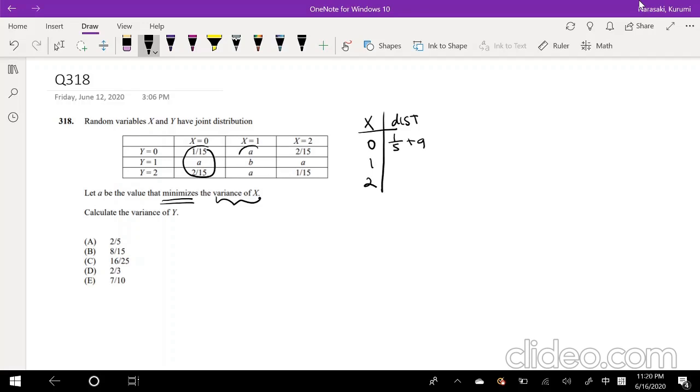When the X value is equal to 1, the distribution is 2a plus b. When it's equal to 2, it's the same thing: 3 over 15, or the same thing as saying 1 over 5 plus a. So, and we also know how to find variance. Variance of X, as we recall from other videos, is the expectation to the second moment minus the whole expectation squared. Okay?